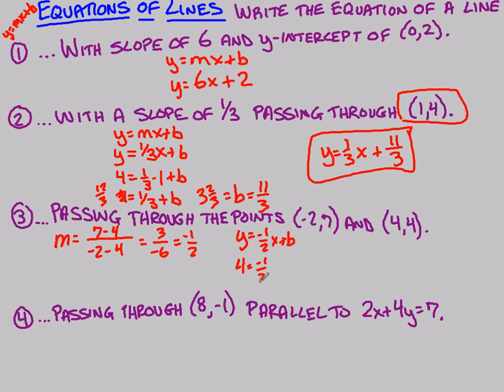So, 4 equals negative 1 half times 4 plus b. So, I'm still going to get 4 equals negative 2 plus b. So, that means when I add 2 to both sides, I get b will equal 6. So, again, my final answer, y equals negative 1 half x plus my b, which is 6. Negative 1 half x plus 6.